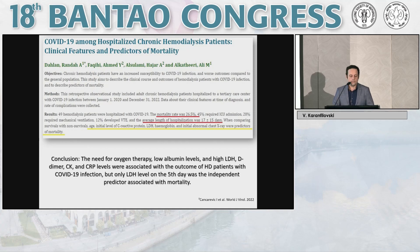In conclusion, the need for oxygen therapy, low albumin levels, high lactate dehydrogenase, D-dimer, creatinine kinase, and CRP levels were all associated with outcome in hemodialysis patients with COVID-19. However, only the level of lactate dehydrogenase on the fifth day was the independent predictor associated with mortality and was higher in deceased patients.